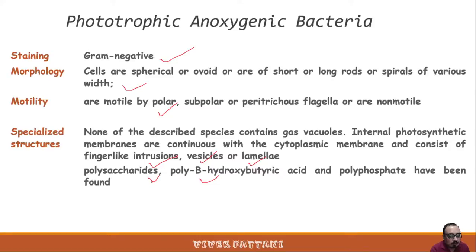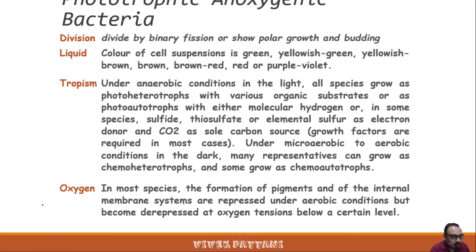Polybeta-hydroxybutyric acid and polyphosphate have also been found. Whereas in plant cells photosynthetic membranes are stacked, in these bacteria the membranes are continuous. They divide by binary fission or show polar growth and budding. The color of cell suspension is green, yellow-green, yellow-brown, brown, red, or purple-violet, due to the presence of various photosynthetic pigments and carotenoids under anaerobic conditions.